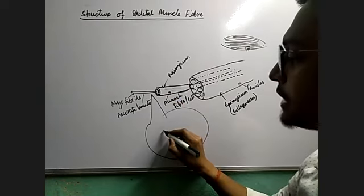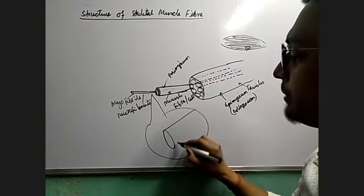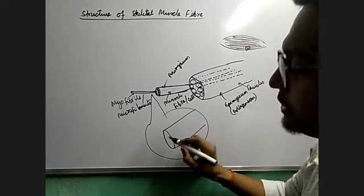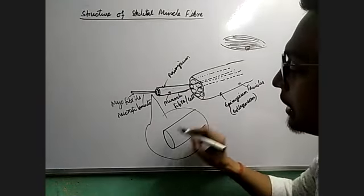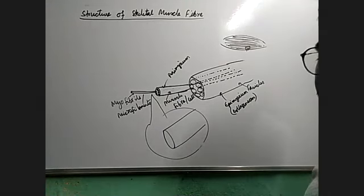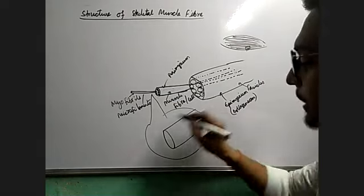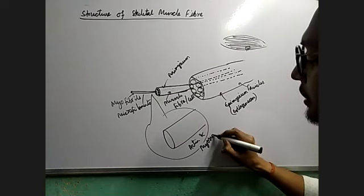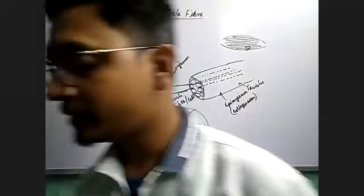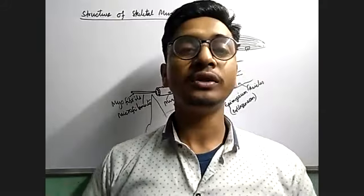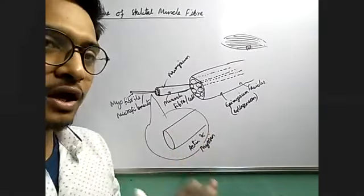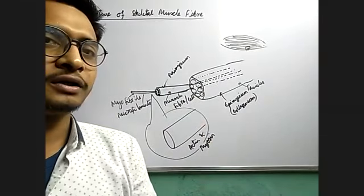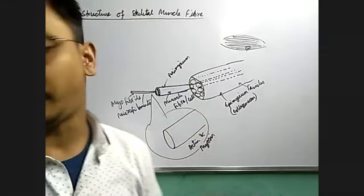Inside this myofibril, we will be able to see that there are actin and myosin proteins — two types of contractile proteins known as actin and myosin. Now let us see the arrangement — how these actin and myosin proteins are present inside one myofibril. It's a very interesting and conceptual part, so be focused.